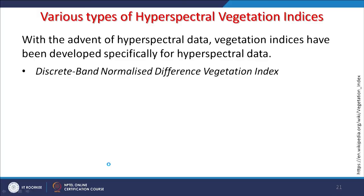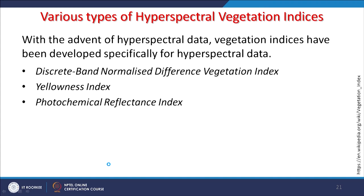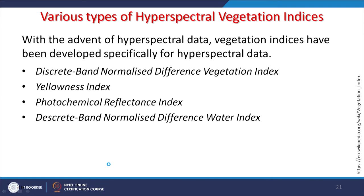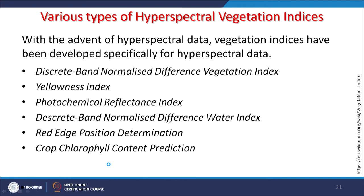Hyperspectral vegetation indices include: discrete band normalized difference vegetation index, yellowness index, photochemical reflectance index, discrete band normalized difference water index, red edge position determination, crop chlorophyll content prediction, and moment distance index. Various such indices are possible with hyperspectral remote sensing because more bands are available.